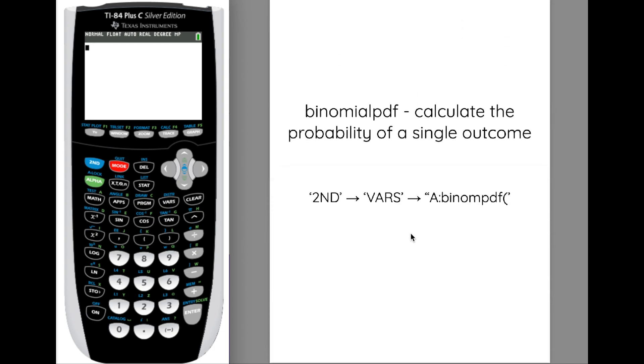First, you want to look at the binomial PDF, and that is when there's one single outcome that you're looking at. The way we do that is we hit second, VARS, and that gives us this distribution menu. We have to scroll down to letter A, and it says binomial PDF. Then we plug in our options, so we hit A, we hit enter.